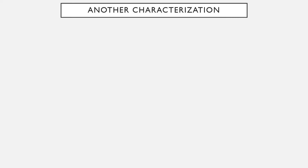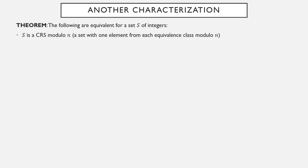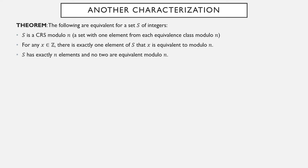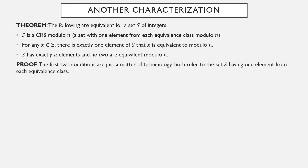Let's look at another way to describe complete residue systems. The following conditions are all equivalent: a set S is a complete residue system modulo n; S has one element from each equivalence class mod n; for any integer x, there is exactly one element of S that x is equivalent to mod n; or S has exactly n elements and no two are equivalent mod n. The first two are really just a rephrasing of one another — everything is equivalent to something, and the set of things it's equivalent to is its equivalence class.